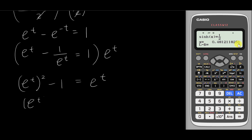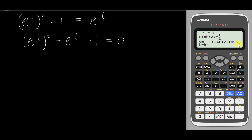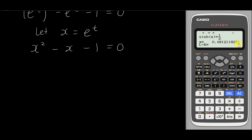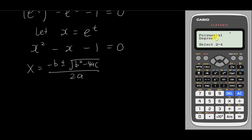Since I already know this is a quadratic, I rearrange into general form. To make it clearer, let x = e^t. Then you can see this is x^2 minus x minus 1 = 0. We can't easily factorize this, so we use the quadratic formula: (−b ± √(b²−4ac)) / 2a. To save time, the calculator can apply this formula directly. Go to menu, look for equation, enter it, choose polynomial degree 2, then insert a = 1, b = −1, c = −1.